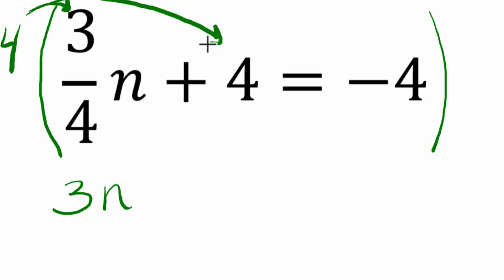Then we'll multiply by our next term, the one separated by the plus sign. Four times four is sixteen. And finally, four times negative four, that's negative sixteen.